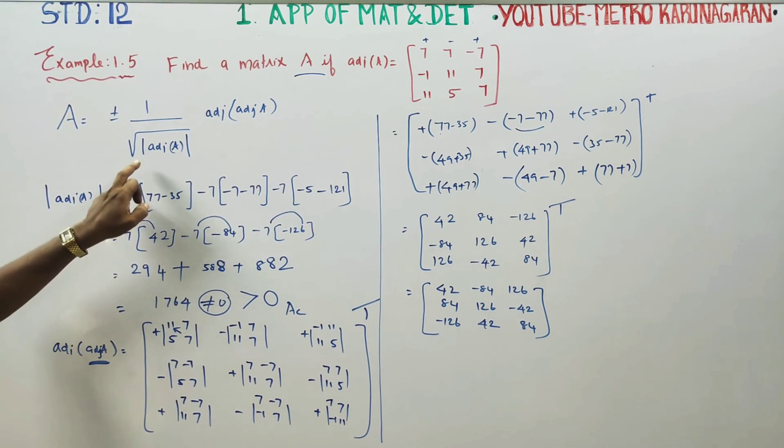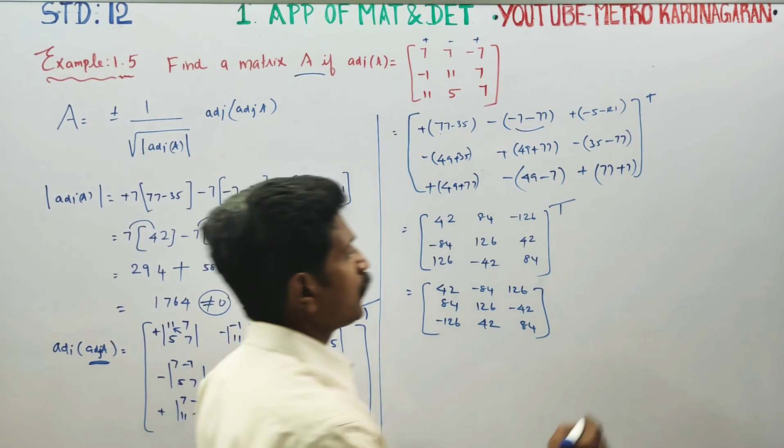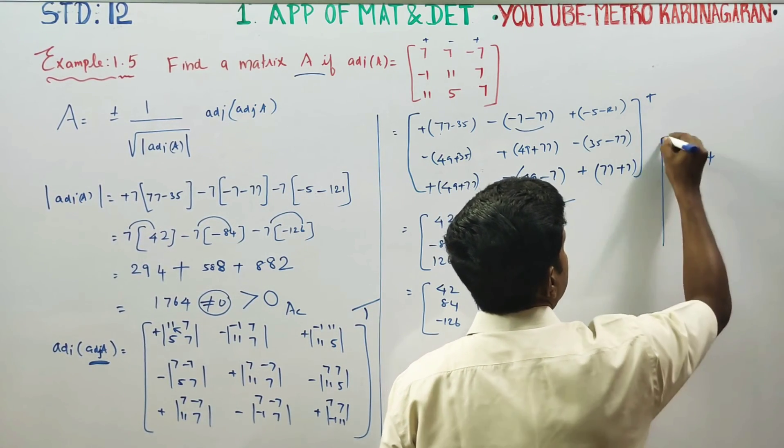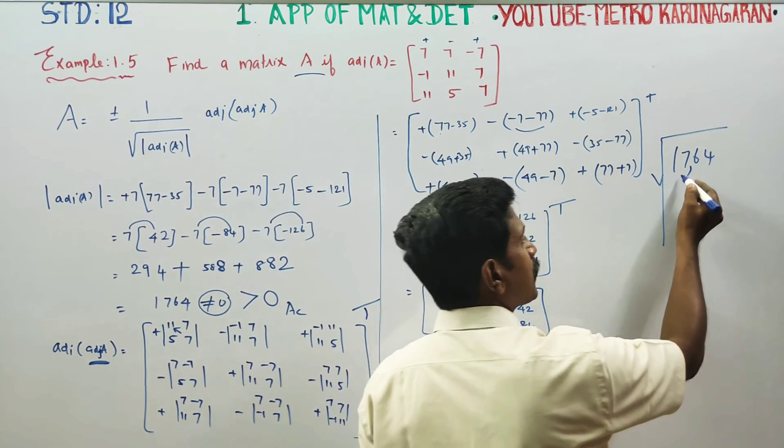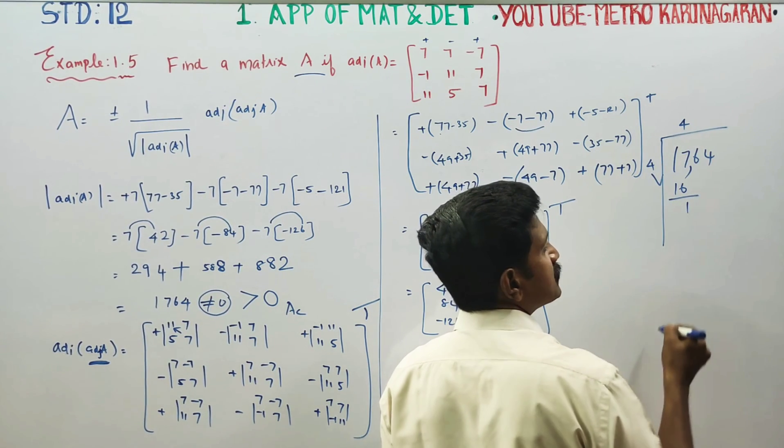Finally to conclude the sum, you have to find the square root of adjoint, square root sum complete. 4 times 4 is 16, balance is 1. 1 times, square root is 42.